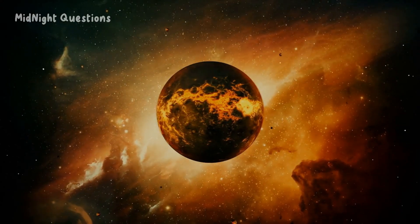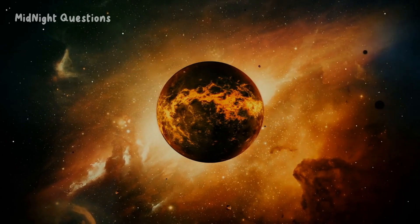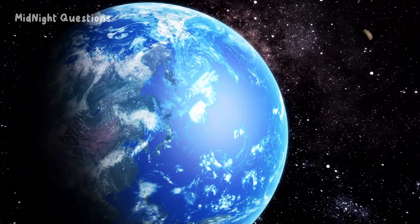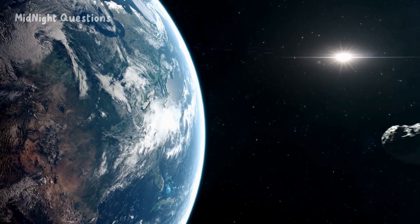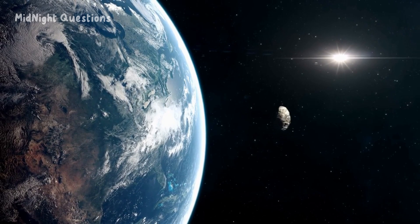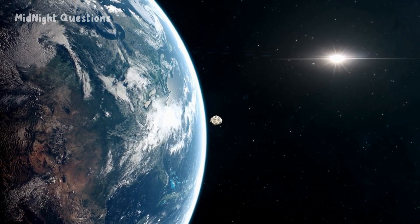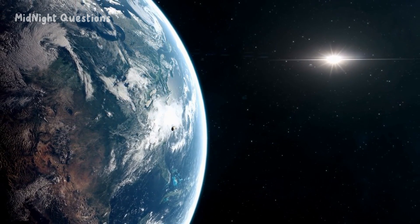However, the future of life on Earth is not necessarily a rosy picture. A catastrophic event could wipe out all life on the planet, as it has happened in the past. A massive asteroid impact or super-volcanic eruption could be catastrophic for life on the planet, and it would take millions of years for life to recover, if it ever does.